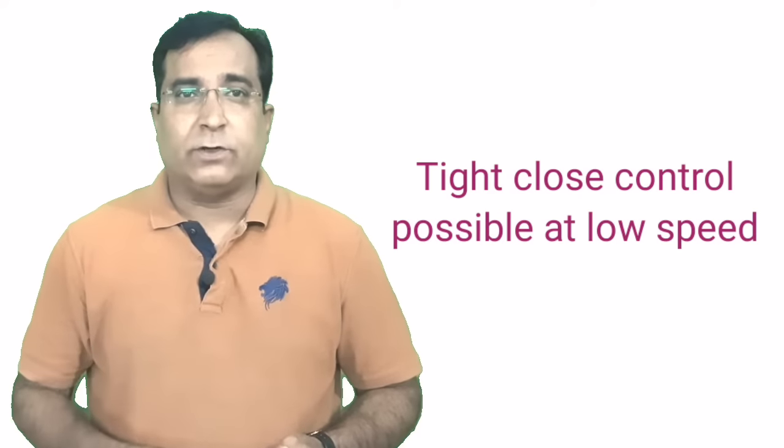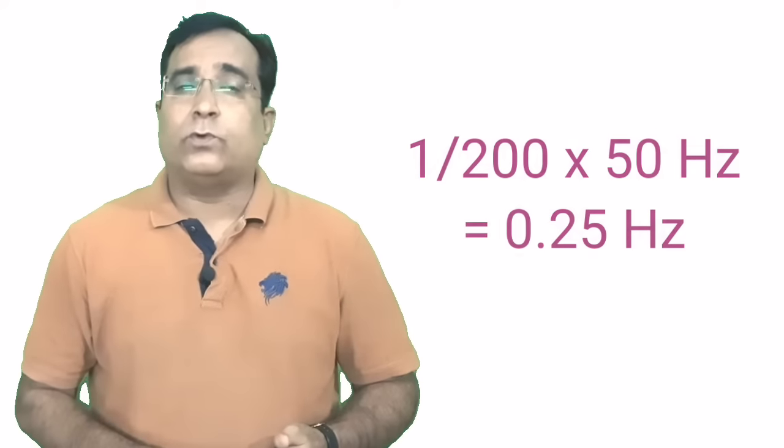Open loop vector control: In open loop vector control mode, the motor offers up to 200 percent torque at a very low speed of 0.25 hertz, with which you can pick up heavy load at the starting with tighter speed control. The speed control range is possible up to 1 is to 200, that means you can go to low speed up to 0.25 hertz without sacrificing the torque.